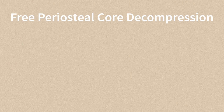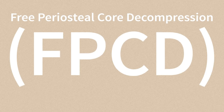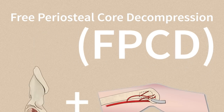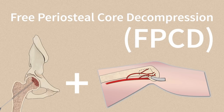A newer option in the treatment of AVN is free periosteal core decompression or FPCD. FPCD involves a core decompression followed by placement of vascularized periosteum — which is the outer lining of the bone — into the hole created by the core decompression.